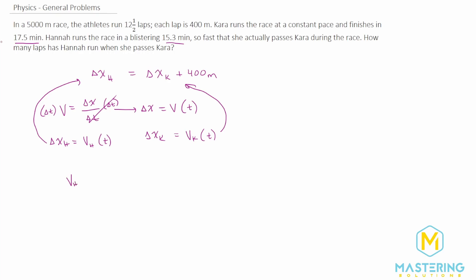So we have the velocity of Hannah times the time and then we have the velocity of Kara times the time plus 400 meters. So now our goal is to isolate the time because that's what we need from this equation.